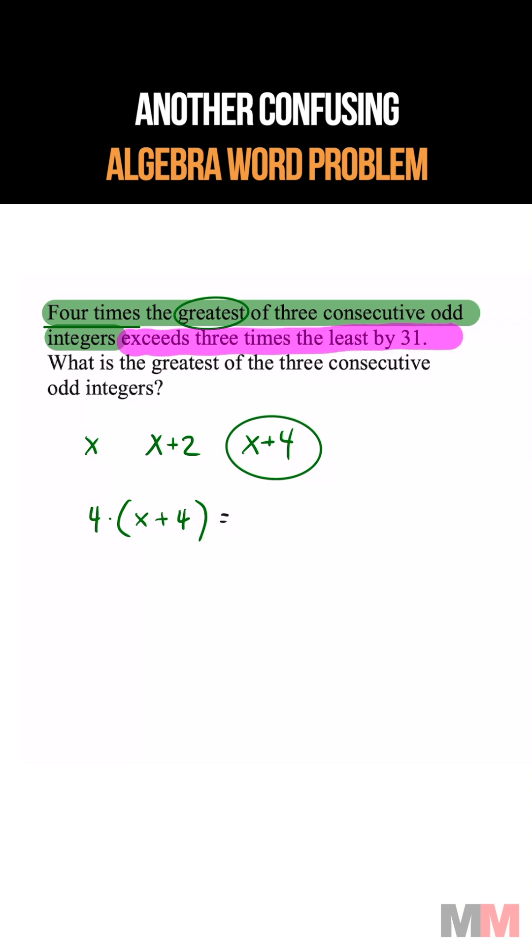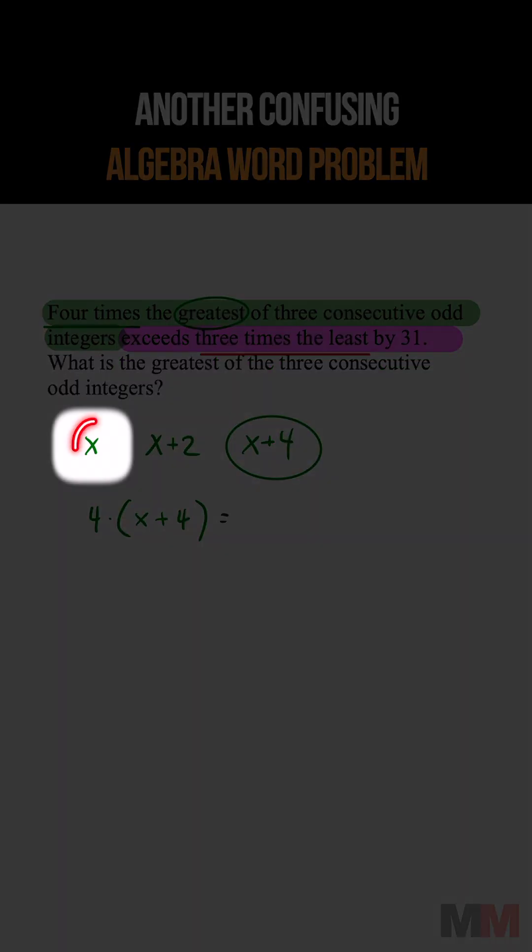And to write this expression, we got to take the least of the three consecutive integers, which is this expression right here.